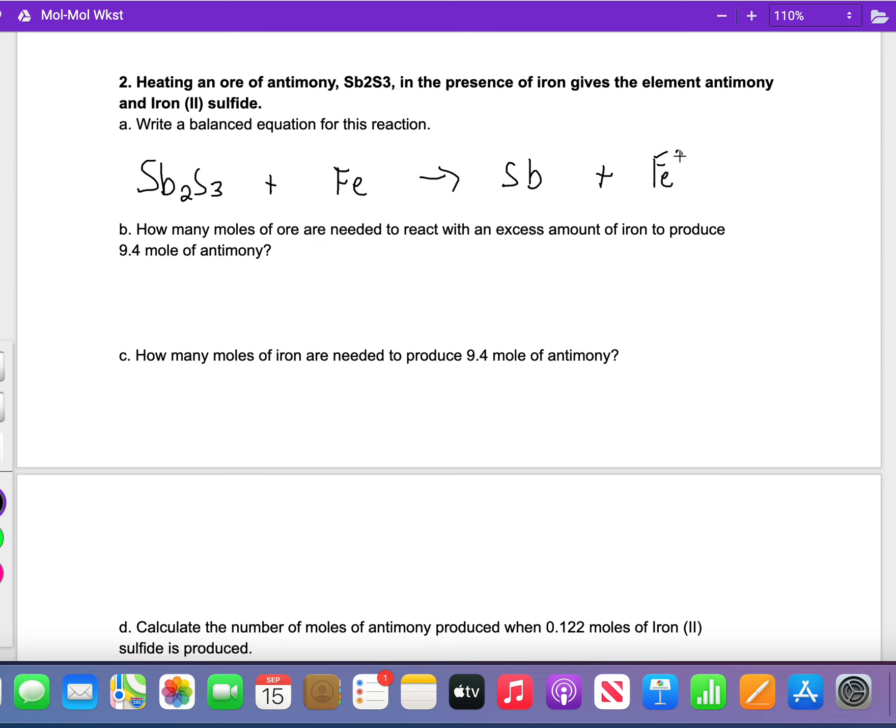So you want to balance that. Looks like we need 2 antimony, so I'll try a 2 there. Looks like we need 3 sulfur, so I'll put a 3 here. That gives me 3 irons here and that's balanced. I'll put a 1 there.